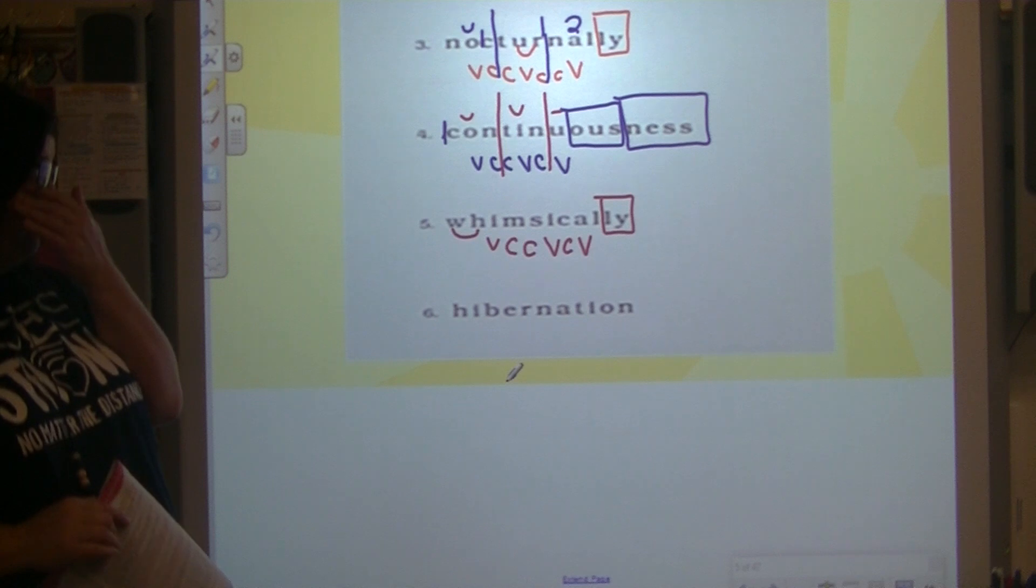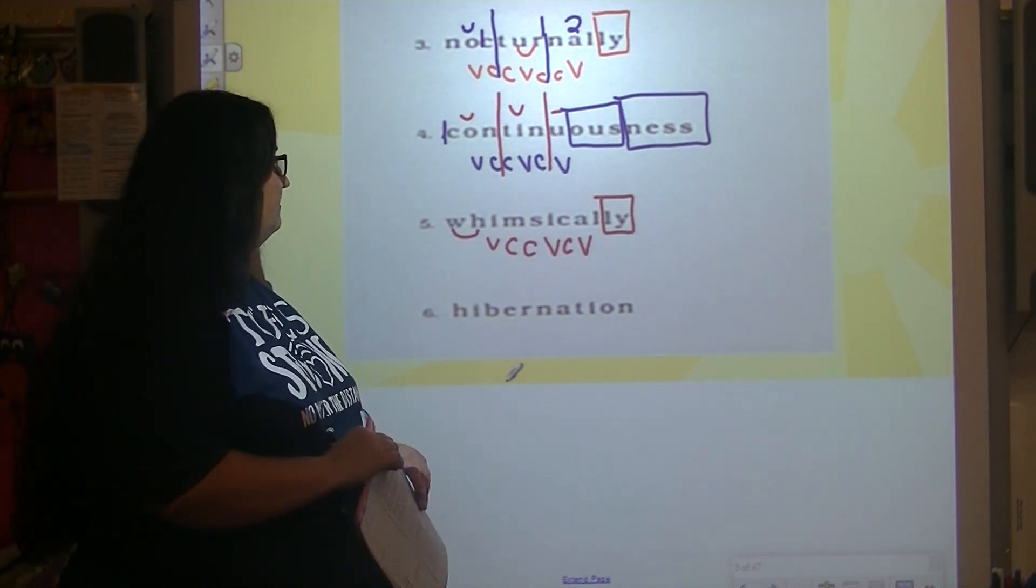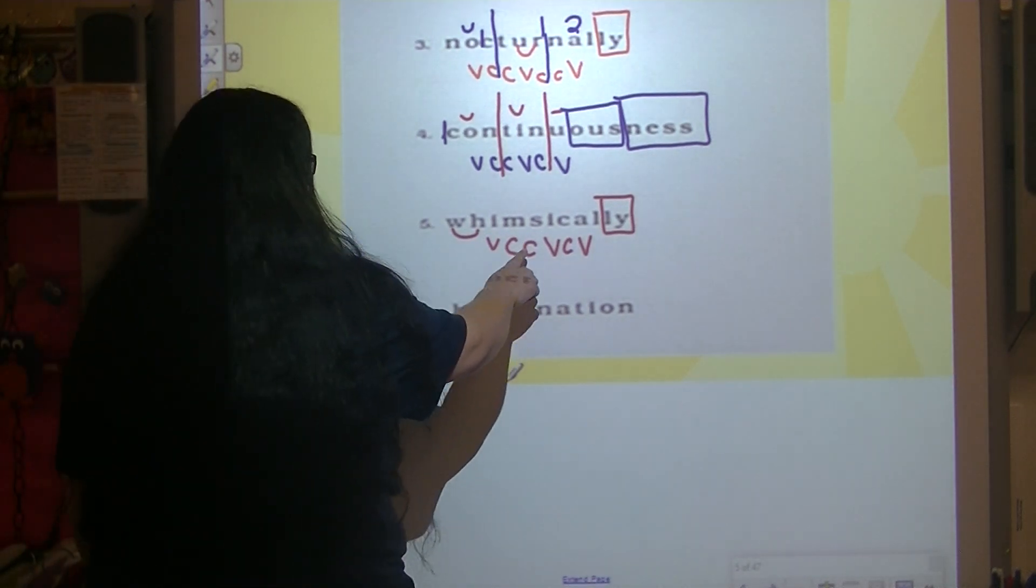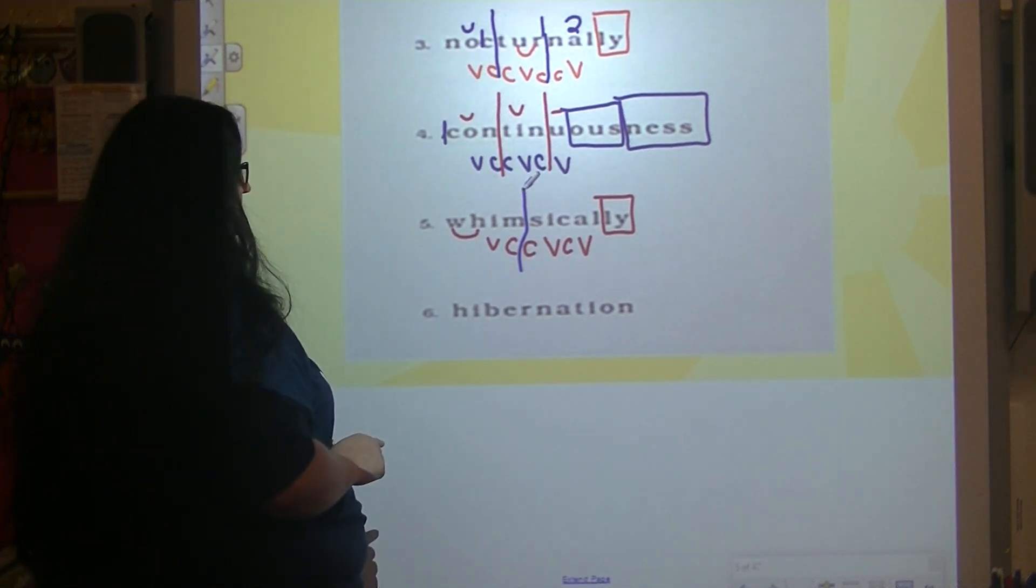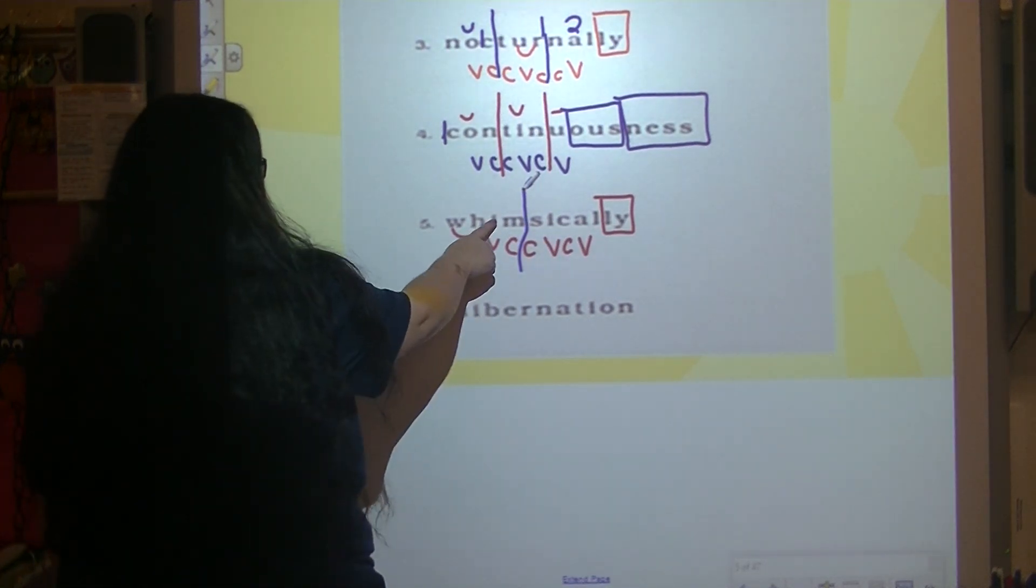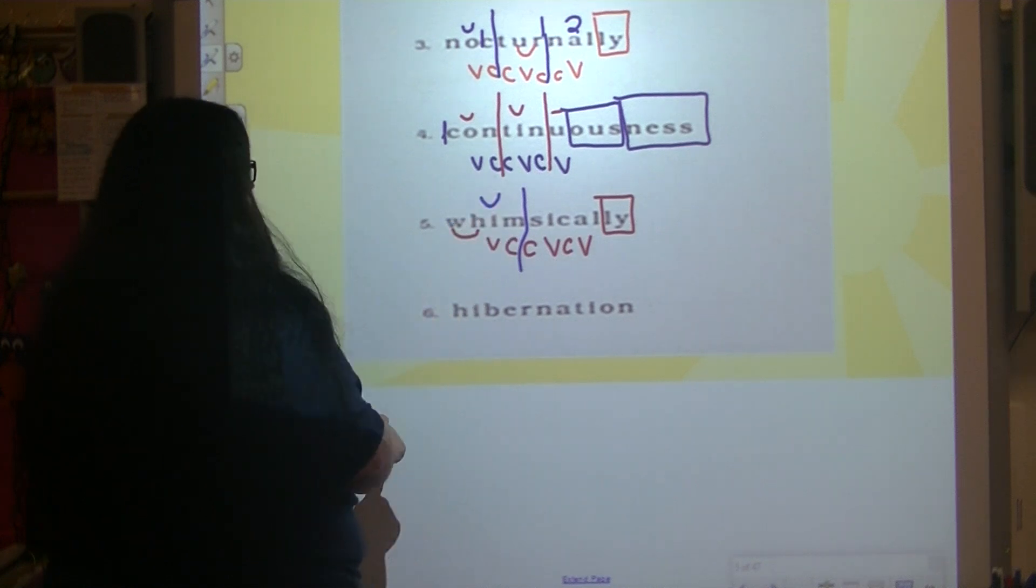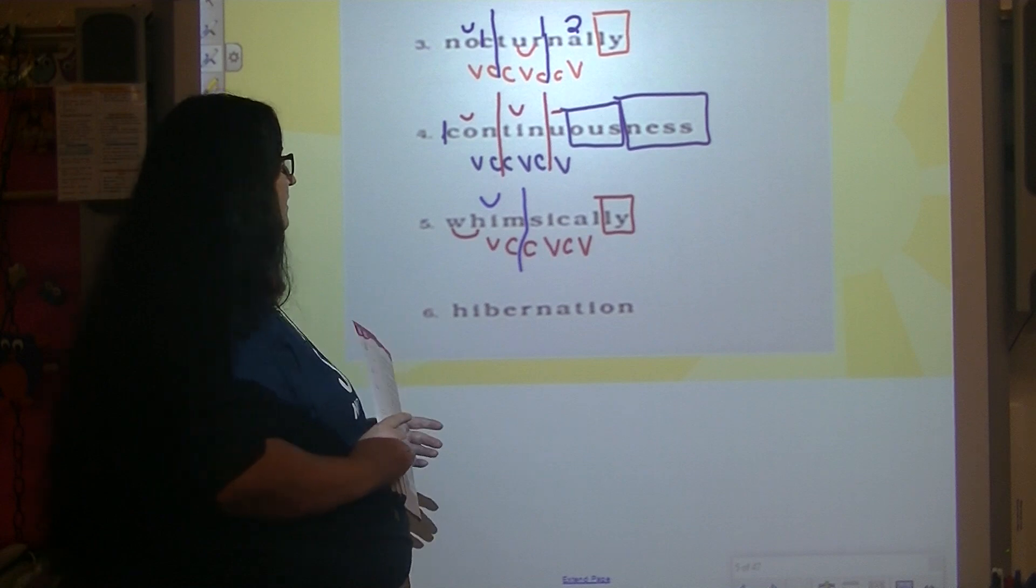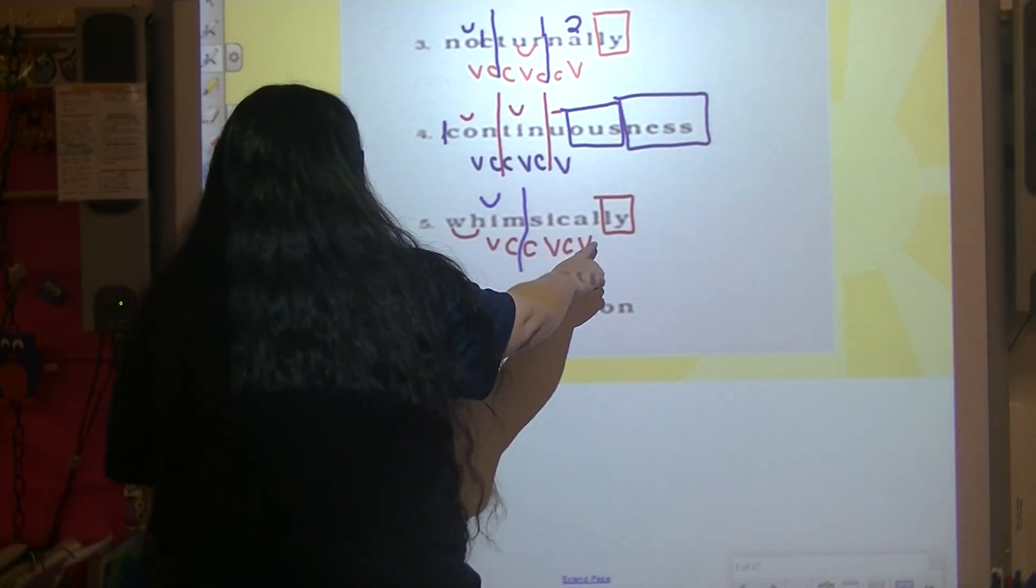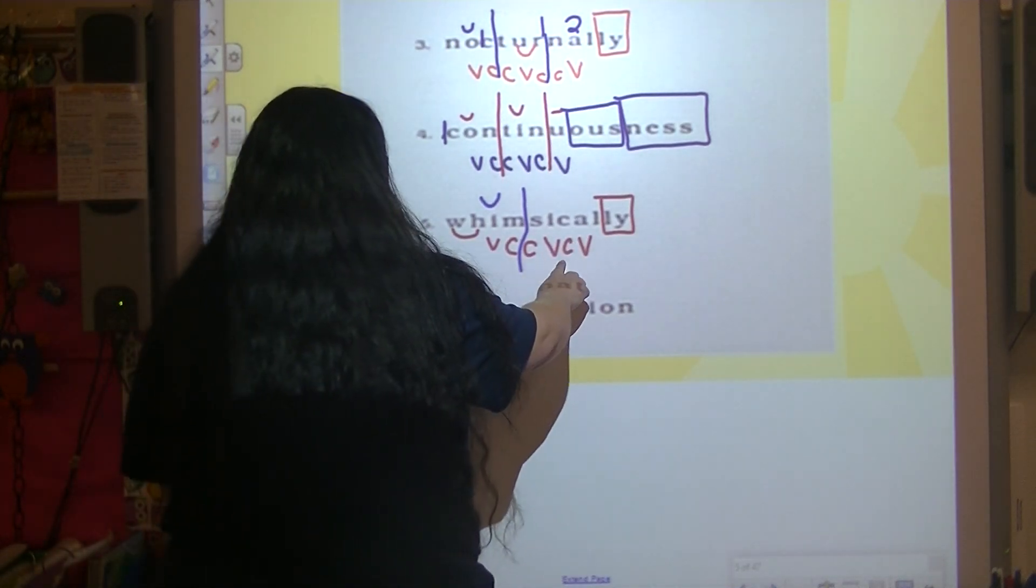Alright, if it's vowel, consonant, consonant, vowel, we divide between the two consonants. Vowel, consonant, vowel - we can divide after the vowel.